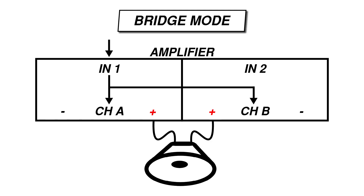While the two amplifier channels work separately in both stereo mode and parallel mono, in bridge mono the two amp channels work together. By harnessing the power of both amplifier channels, you're able to supply the speaker with more power than either channel could supply alone. In bridge mono mode, input 1 is routed to both channel A and channel B, just like in parallel mono mode. However, bridge mono mode is different in a few very important ways.